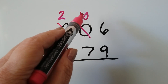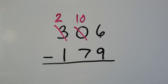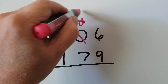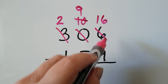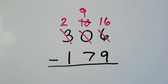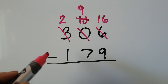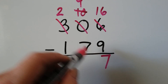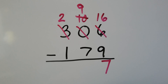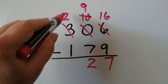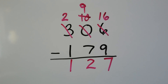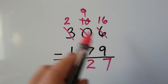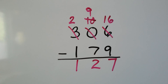Now the ones place can be regrouped, and the tens place can be regrouped because it has enough. So this 10 is going to become a nine, and this six is going to become a 16 — we're going to take one of the tens from here and give it to the ones place. 16 minus nine — that would be a seven. Nine minus seven is a two. And two minus one is one. So if there's a zero in the tens place and you still need to regroup, you just go to the hundreds place and regroup a couple times.